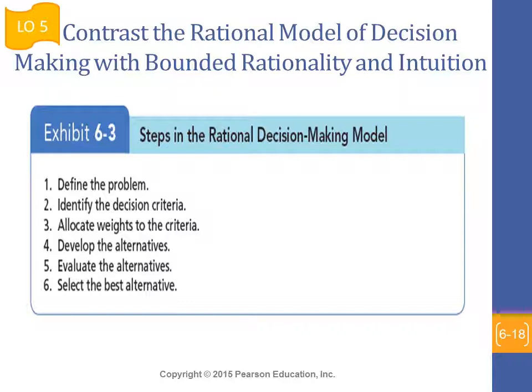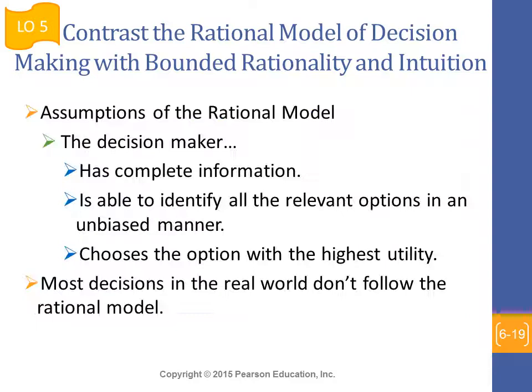Exhibit 6.3 outlines the steps a rational decision maker should follow: define the problem, identify decision criteria, allocate weights to criteria, develop alternatives, evaluate alternatives, and select the best option. The problem is that the rational model assumes the decision maker has complete information and can identify all relevant options in an unbiased manner — conditions that are often not met in the real world.